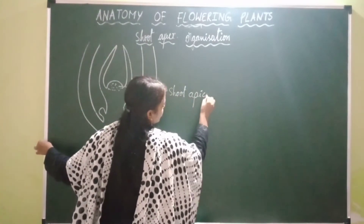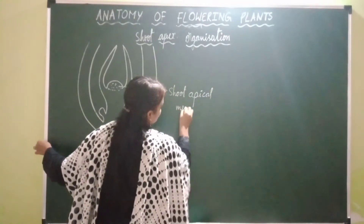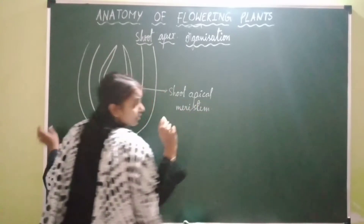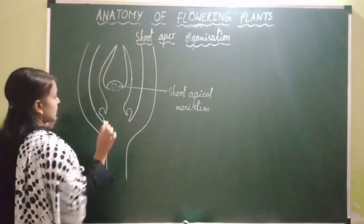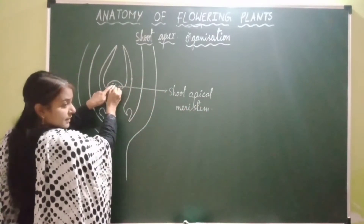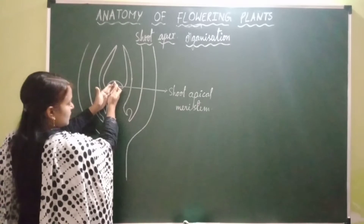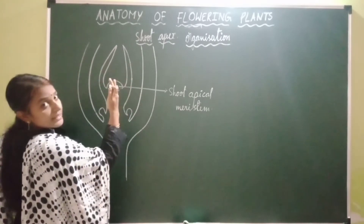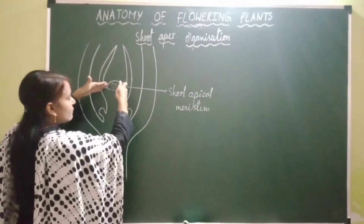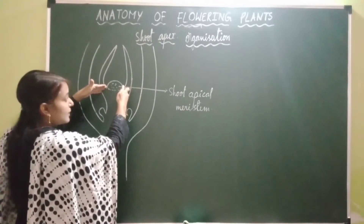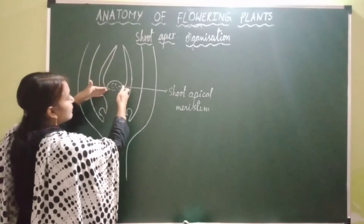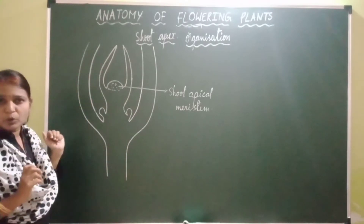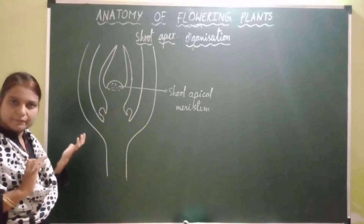When the cells of the shoot apical meristem undergo cell division, it first cuts off cells towards the flanks — that is towards the lateral side. The cells flanking this apical meristem are developing into leaf primordia, which are nothing but primitive leaves.